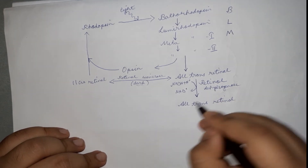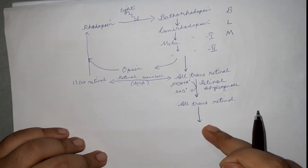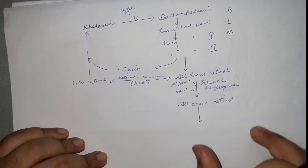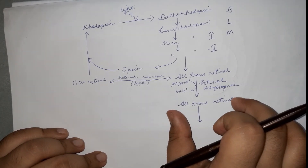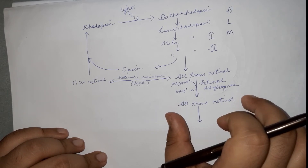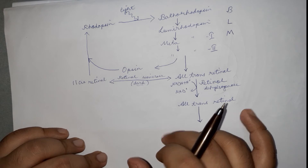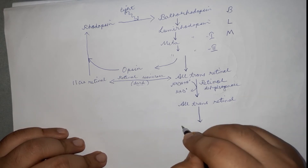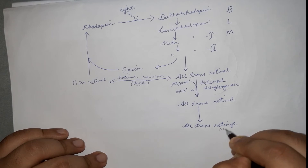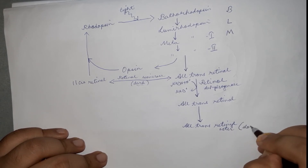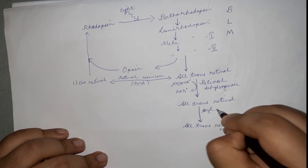Retinol dehydrogenase converts all-trans retinal into all-trans retinol, which is then transported to the liver. In the liver, all-trans retinol is stored in the form of a retinol ester — all-trans retinol ester — via the enzyme acyl transferase.